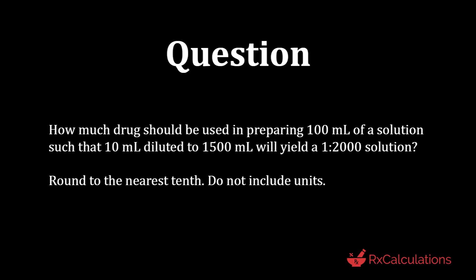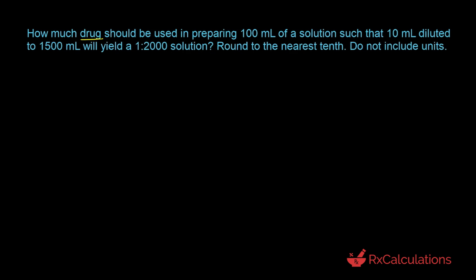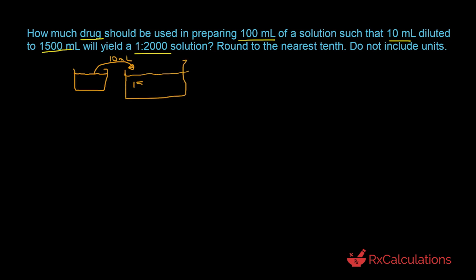This question says: how much drug should be used in preparing 100 milliliters of a solution such that 10 milliliters diluted to 1500 milliliters will yield a 1 is to 2000 solution? Round to the nearest tenth. Do not include units. In this question, the goal is to determine the quantity of a drug in grams such that when you prepare 100 milliliters of the solution and take out 10 milliliters to dilute to 1500 milliliters, the concentration will be 1 is to 2000.